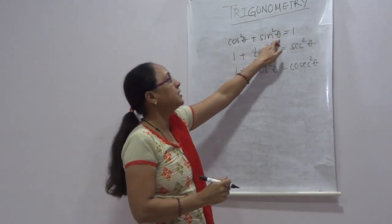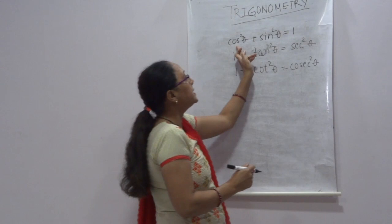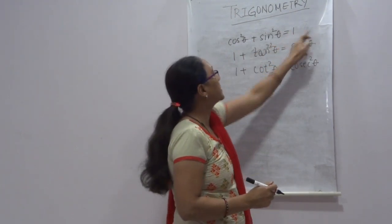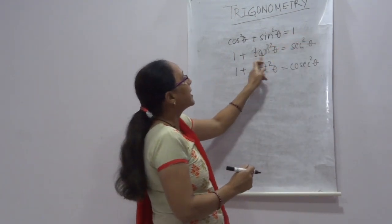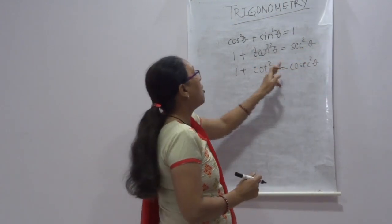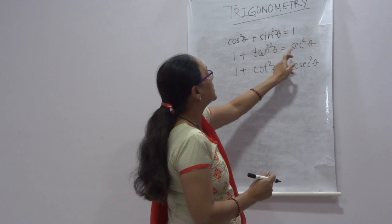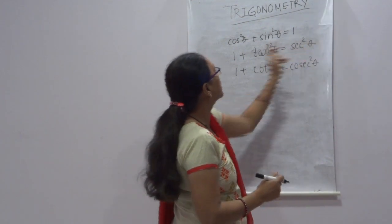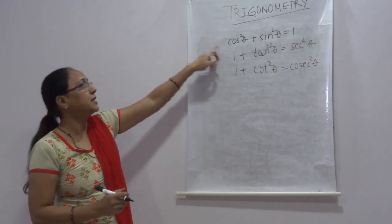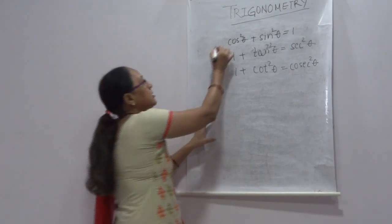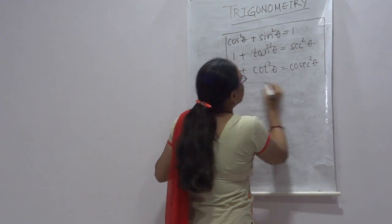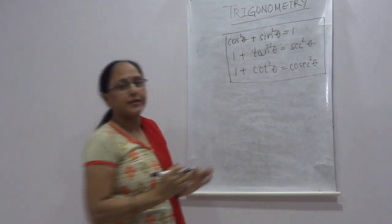Suppose sin²θ is given to you — you can change this identity as 1 − cos²θ. Or we can say tan²θ = sec²θ − 1, or sec²θ − tan²θ = 1. In this way you can rearrange the identities. Learn these identities by heart.